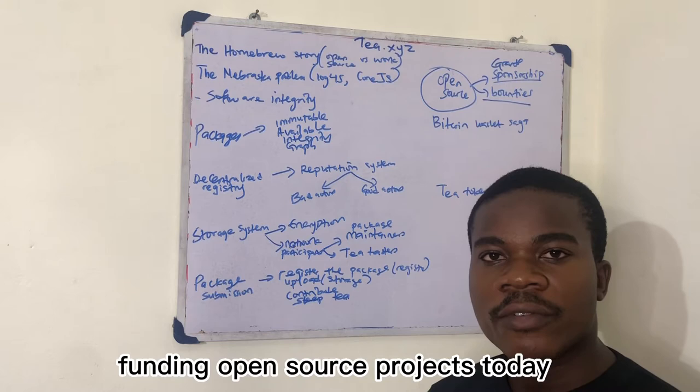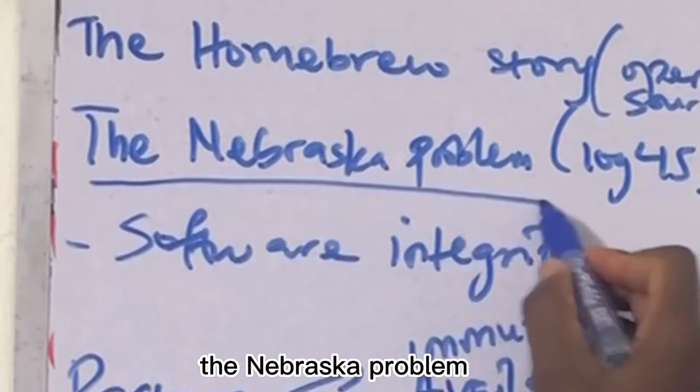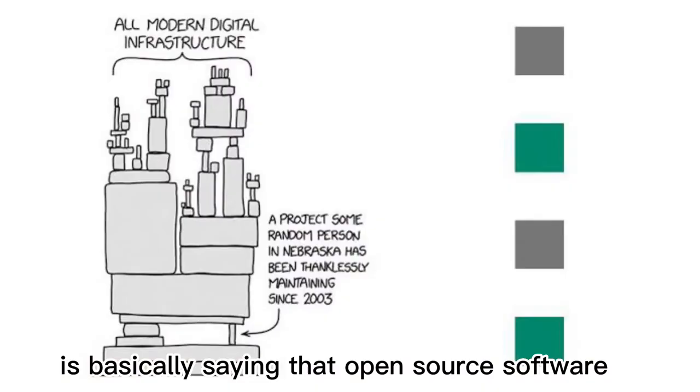So there is no cohesive way towards funding open source projects today. The Nebraska problem.